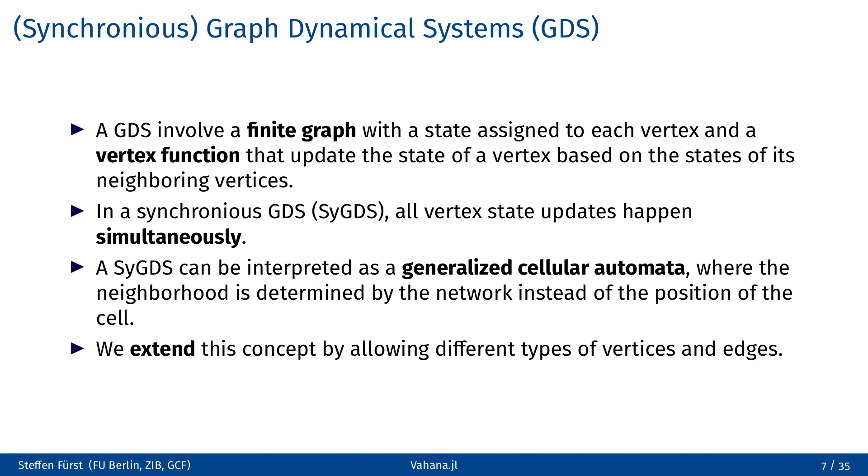A graph-dynamical system, GDS for short, is a graph where each vertex has a state. There is a vertex function that updates the state of a vertex only based on states of its neighboring vertices. We are interested in synchronous graph-dynamical systems, where all vertex-state updates happen simultaneously. This can be also seen as a generalized cellular automata. The difference is the neighborhood relationship. In a cellular automata, the neighbors are defined via the position of the cells on the grid, so we have a spatial neighborhood. In a GDS, the neighborhood of a vertex is given by the incoming edges of the graph.